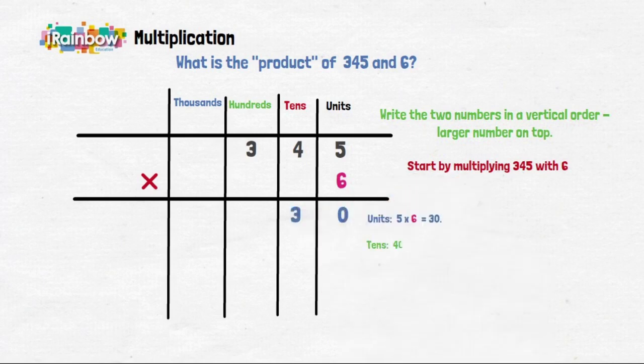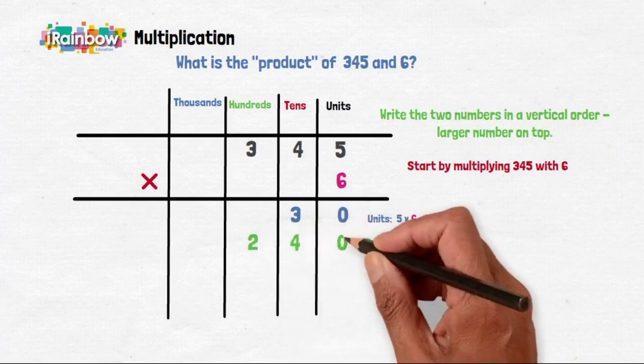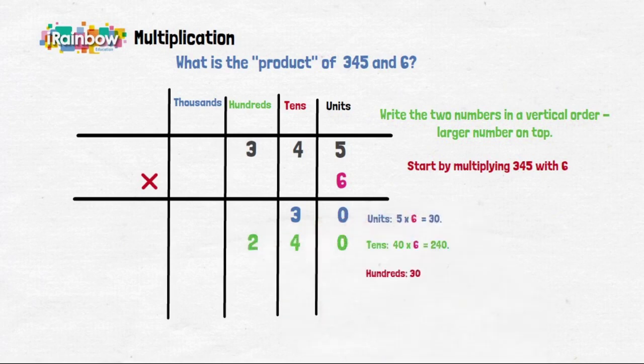In the tens column, 40 times 6 is equal to 240. In the hundreds column, 300 times 6 is 1800.